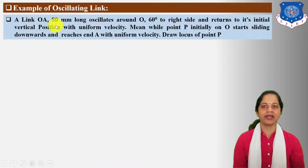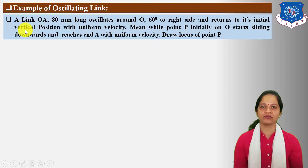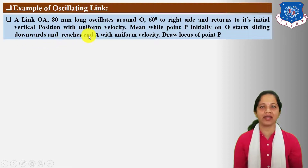Next, let us solve the example of oscillating link. A link OA 80 mm long oscillates around O, 60 degrees to the right side, and returns to its initial vertical position with uniform velocity. Meanwhile, point P initially on O starts sliding downwards and reaches A with uniform velocity. Draw the locus of point P.